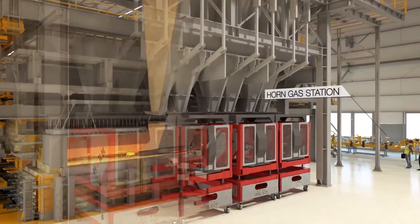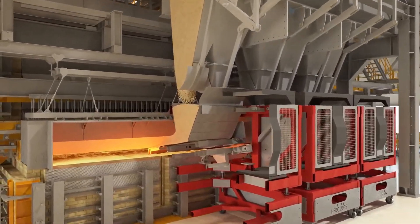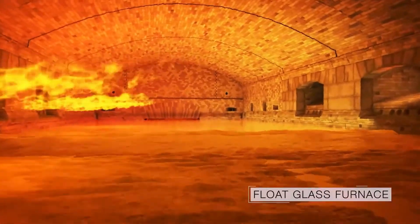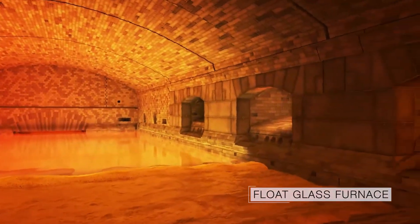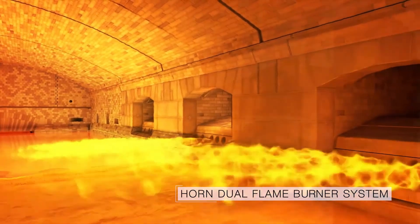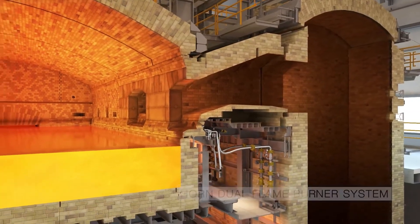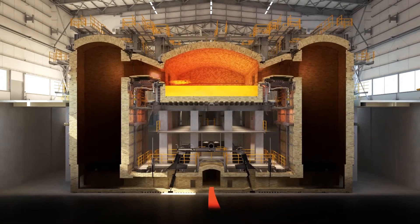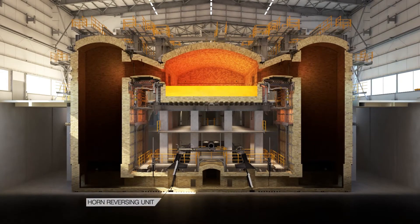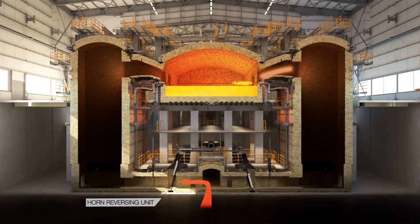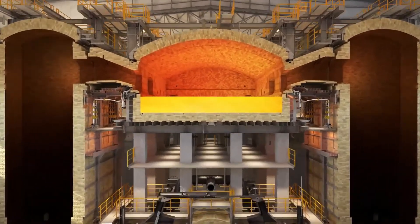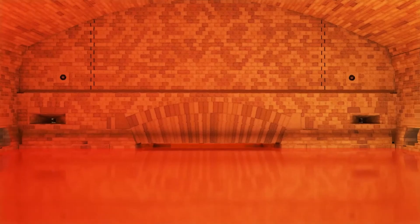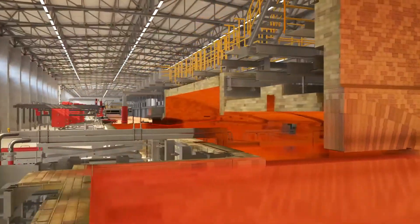The Horn gas station is a critical infrastructure that supplies and regulates the fuel needed for the float glass furnace, ensuring a consistent and controlled delivery of gases like natural gas, essential for maintaining the high temperatures required in glass melting. The float glass furnace, the heart of the production line, melts raw materials at around 1,600 degrees Celsius. Horn's float glass furnaces provide consistent heat distribution, minimizing energy consumption while maximizing output. The Horn dual flame burner system enhances fuel combustion efficiency and reduces emissions, allowing precise control over flame characteristics and optimizing the melting process.